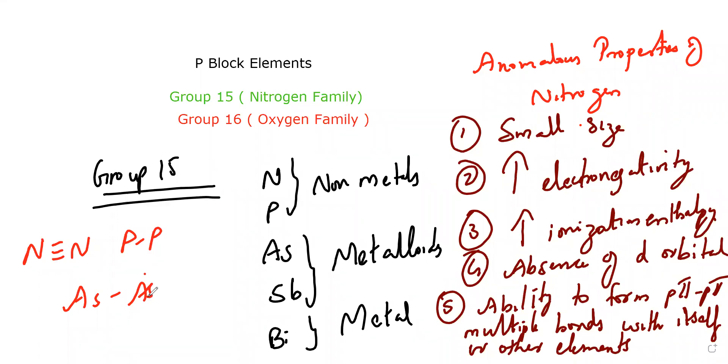Bonding between the same elements - that is catenation. I hope everyone is clear with this. The best example is carbon. It can form either an open chain structure or a closed chain structure.